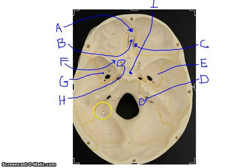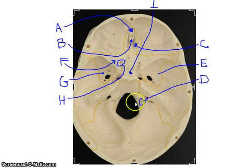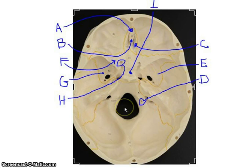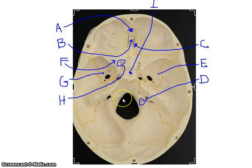Back here on the occipital bone, you can see what's called the hypoglossal foramina. This is also where the foramen magnum is located, which we've already covered. That covers the bones and surface markings visible inside the skull.